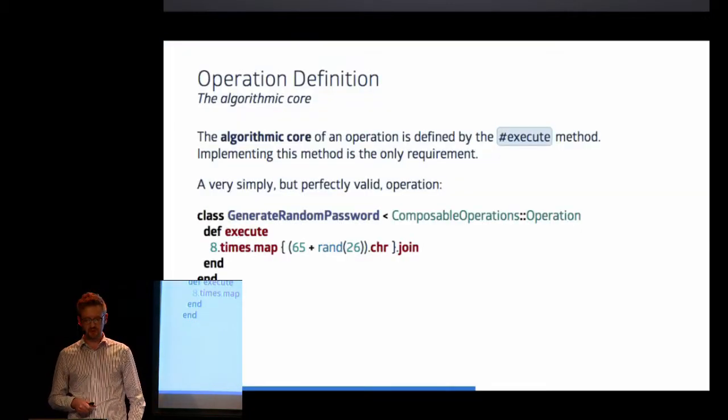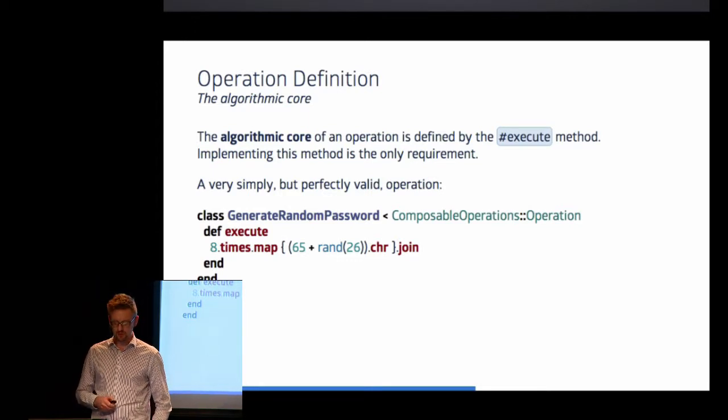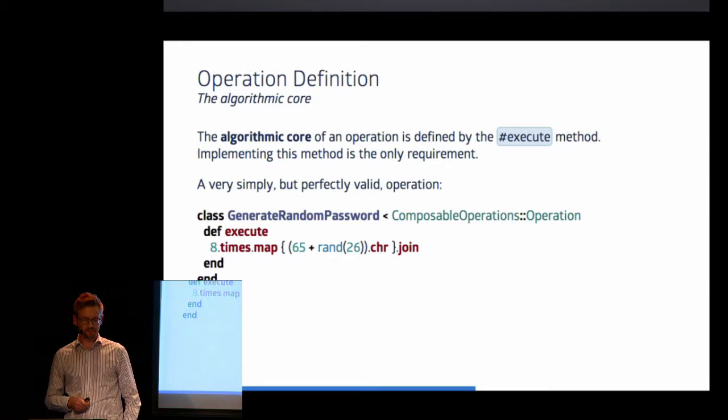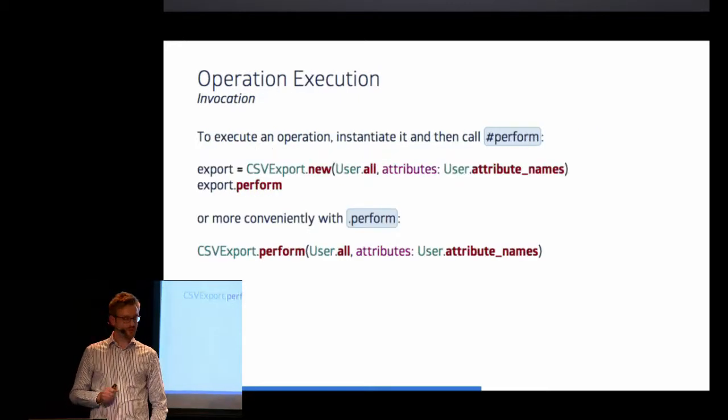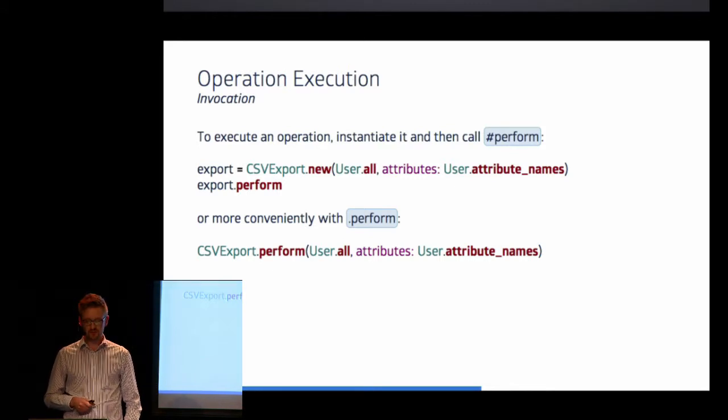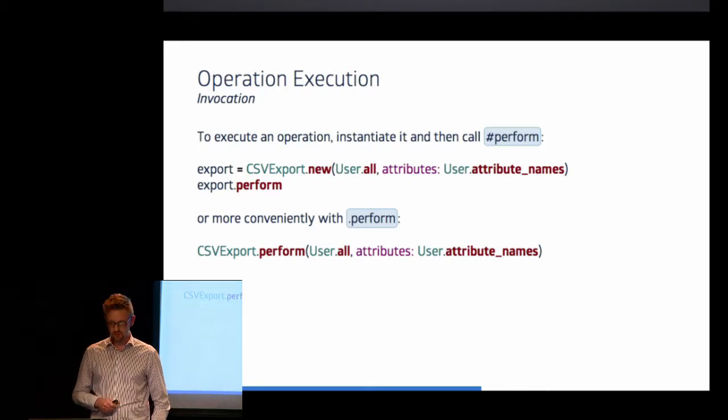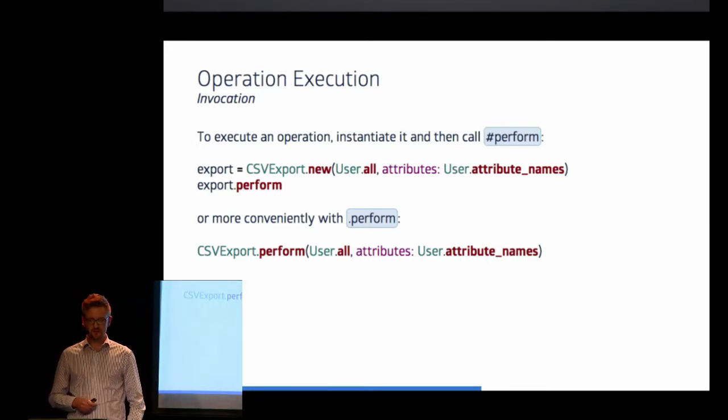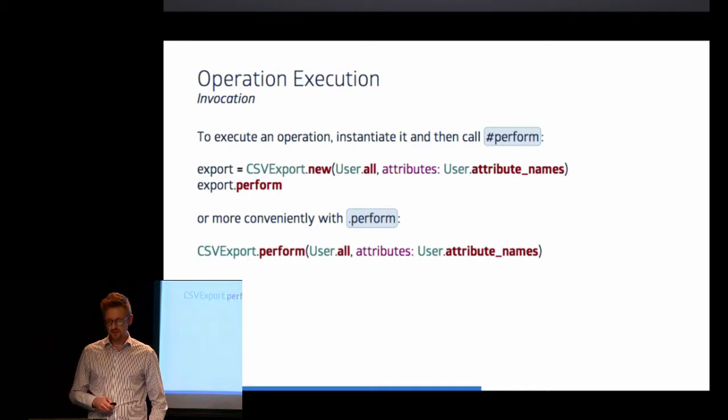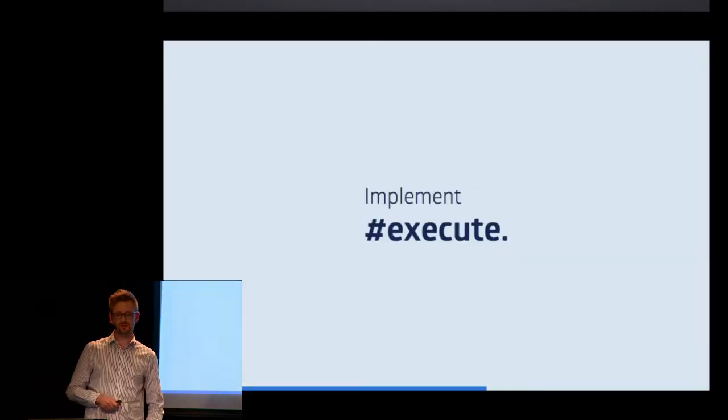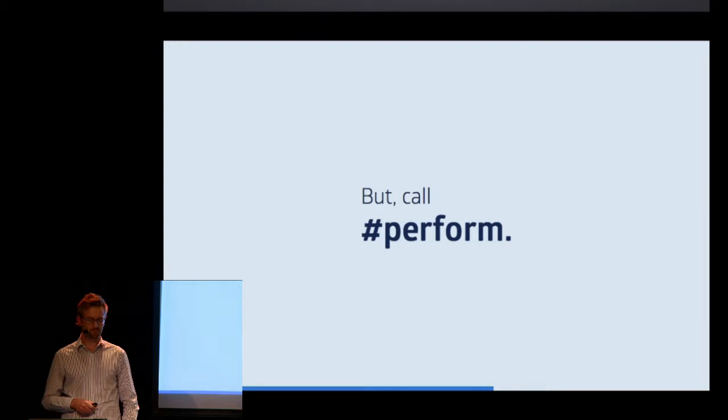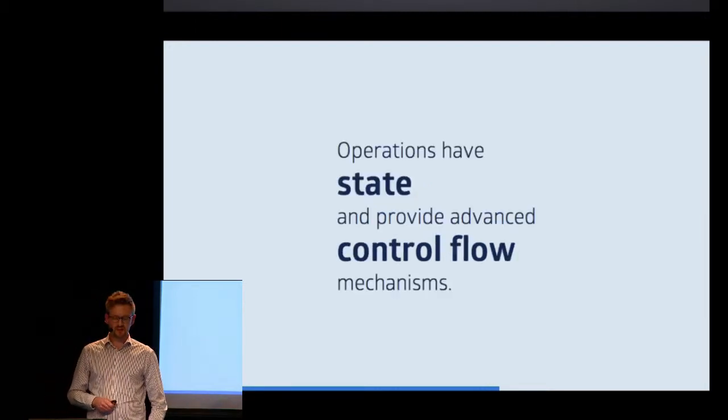Back to operations, let's talk about the most important aspect, and this is certainly the algorithmic core of your operation. And it is the only thing you really need to implement, and you do this by defining the execute method. Now that we know how to define an operation, let's see how we can invoke one. Well, there are two ways. First, you can instantiate an operation, provide all the positional arguments, as well as the configuration options to the constructor, and then simply call the perform method on this instance. Or you can use the perform class method right away, and provide all the necessary attributes. You might have noticed that you implement execute, but you call perform. The reason for that is that operations have state and provide advanced control flow mechanisms, as we will see now.